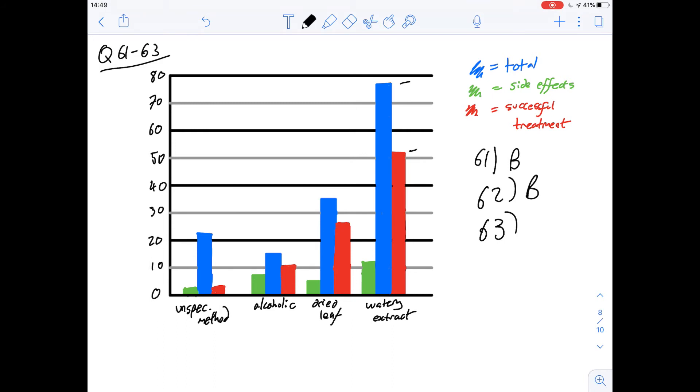We've got our final question now which is for the alcoholic extract suppose the greatest possible number of patients who were treated successfully had side effects. The number with side effects who were not treated successfully is what?